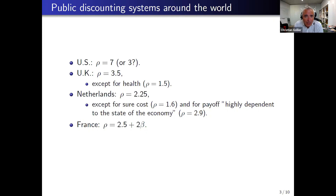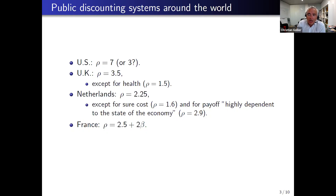In the UK, the discount rate is 3.5%, with an exception for health benefits that should be discounted at only 1.5%. In the Netherlands, the discount rate since last year is 2.25%, except that we should discount less risky costs at a lower rate of 1.6%, and highly uncertain benefits that are highly dependent on the state of the economy at a rate of 2.9%.